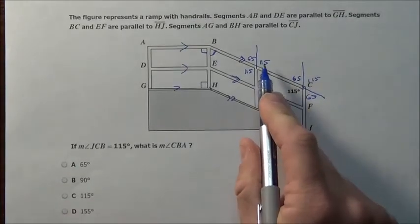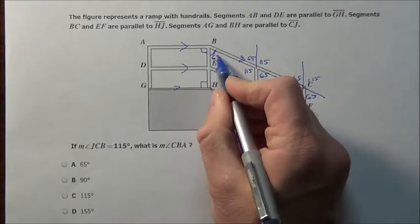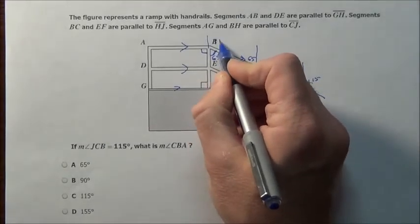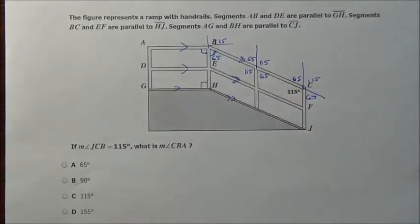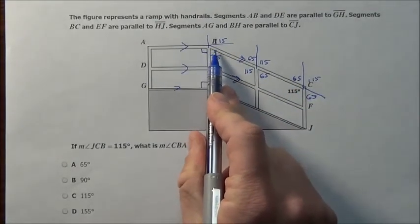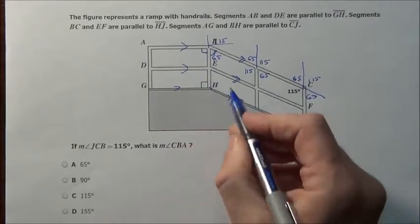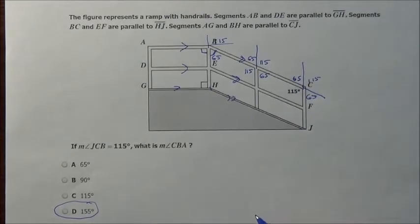Now I can do the same thing again. This 115° and 65° extends to right here. This is 65°, and up top would be 115° if it continued. Either way, I have 90° and 65°, and 90 + 65 = 155°, which gives me choice D.